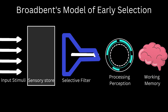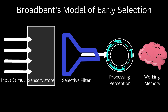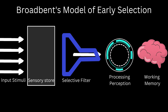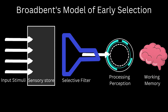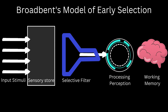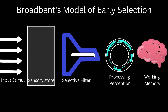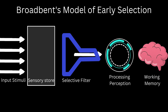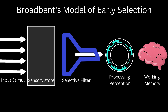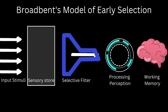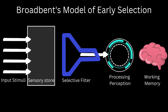This theory is a good way to explain our ability to selectively pay attention to only certain stimuli. But this theory could not explain our ability to switch our attention under certain conditions, like the cocktail party effect.